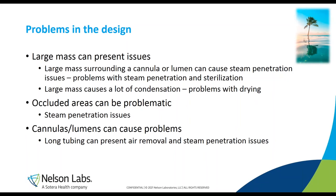Here is a mirage to avoid: large mass can present issues. Large mass surrounding a cannula or aluminum can cause steam penetration issues — condensation from insulation can actually block or occlude steam from penetrating further into a cannula or lumen. Large mass can also cause a lot of condensation contributing to drying issues. Occluded areas and long tubing are problematic; we need to remove the air from that tubing and replace it with steam.